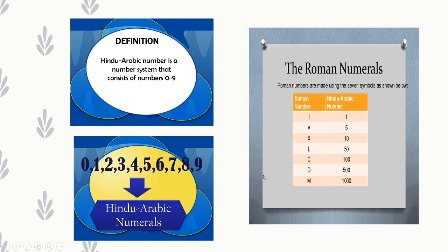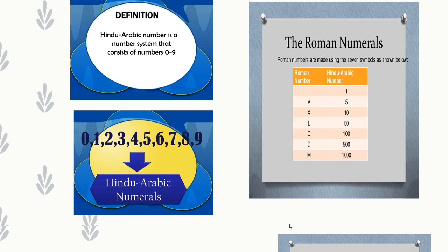In Roman numerals, we use 7 symbols: I, V, X, L, C, D, and M. I = 1, V = 5, X = 10, L = 50, C = 100, D = 500, and M = 1000.